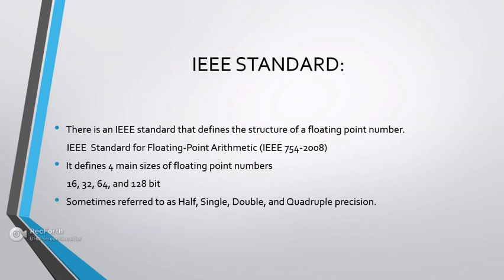Here is an IEEE standard that defines the structure of a floating point number. It defines 4 main sizes of floating point numbers: 16, 32, 64, and 128 bit width. Sometimes they are referred to as half, single, double, and quadruple precision.